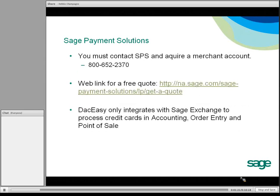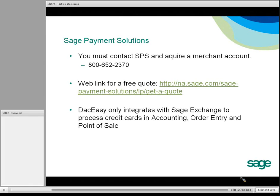The first step in utilizing credit cards in DAC-Easy is you must contact SAGE Payment Solutions and acquire a merchant account. The number is listed here. You can also go to their website at na.sage.com/SAGE-Payment-Solutions, where there's live chat, options to call directly, or even set up a quote. DAC-Easy only integrates with SAGE Exchange to process credit cards in accounting, order entry, and point of sale.